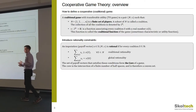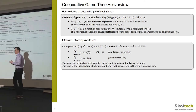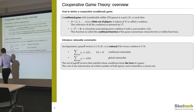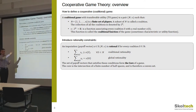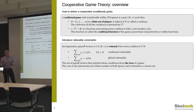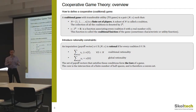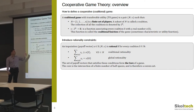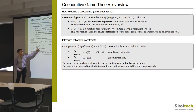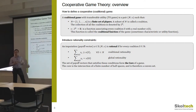As you recall, we defined what a coalitional game is. We need to set two things to define the game: first, a finite set of players N to describe all possible coalitions, and their characteristic function ν that describes these coalitions in terms of savings, costs, or some benefits. We also discussed the rationality conditions — coalitional rationality, meaning each coalition should get at least as much as it can get on its own, and global rationality, meaning the total value allocated equals the value of the grand coalition.